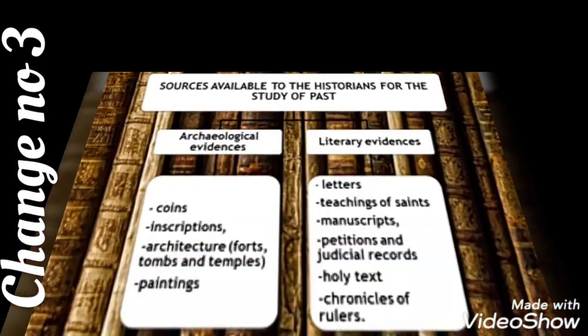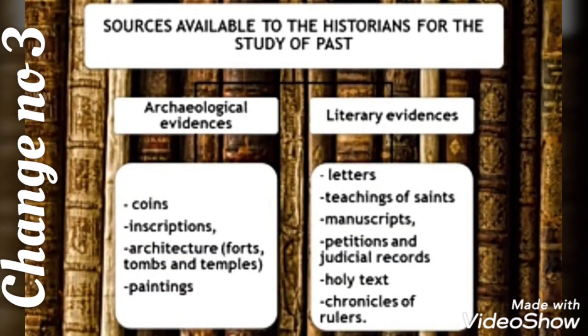Now let us move on to the third change — historians and their sources. Earlier, the sources used by historians were archaeological evidences. Later on, with the invention of paper, loads of literary evidences became common. Archaeological evidences include coins, inscriptions, architecture, and paintings. Literary evidences include letters, teachings of saints, manuscripts, petitions and judicial records, holy texts, and chronicles of rulers.